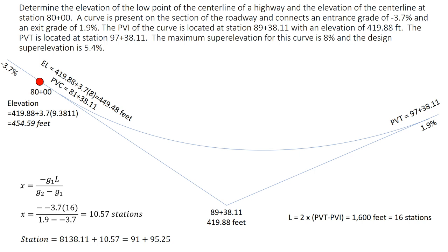So our low point occurs at station 91+95.25 and this should make sense if we're familiar with symmetric parabolic curves. The low point and or the high point always occurs on the side of the PVI with a flatter grade. We're going to see that happens in this case.